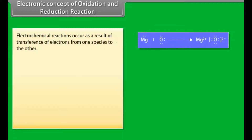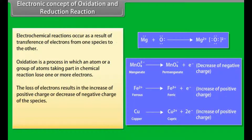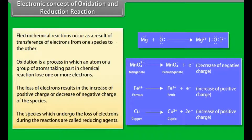The electronic concept of oxidation and reduction: electrochemical reactions occur as a result of transference of electrons from one species to another. For example, if magnesium is burnt in oxygen, it gets oxidized to magnesium oxide. In the formation of magnesium oxide, two electrons from the magnesium atom are transferred to the oxygen atom. Oxidation is a process in which an atom or group of atoms loses one or more electrons, resulting in an increase of positive charge or decrease of negative charge.